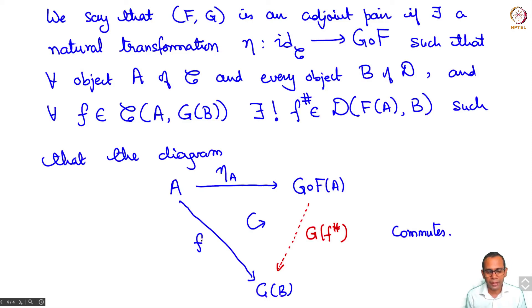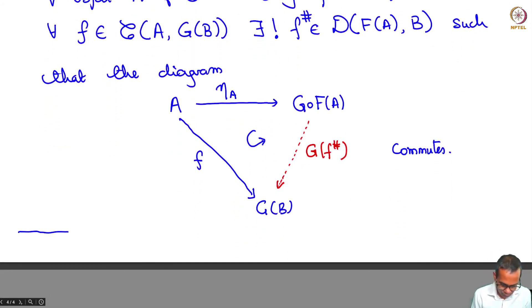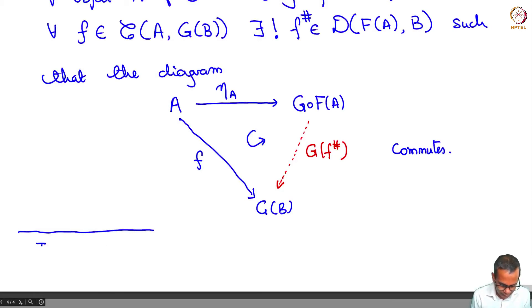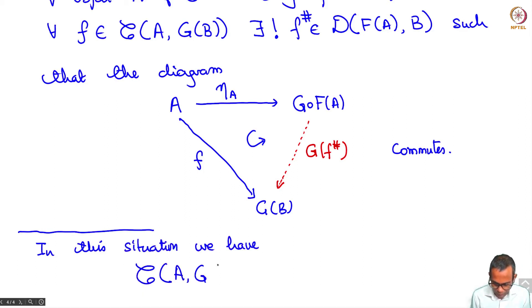F exists uniquely if f is given and it's composed with eta A. And so what this is, we have in the category C the arrows from A to G B are in bijection with the category D arrows from F A to B.